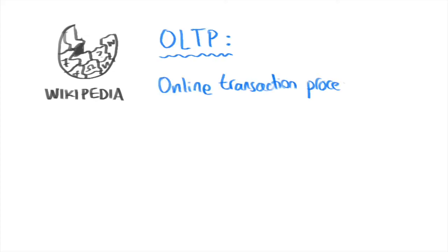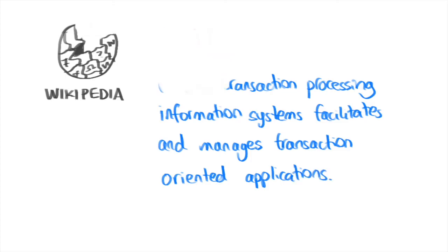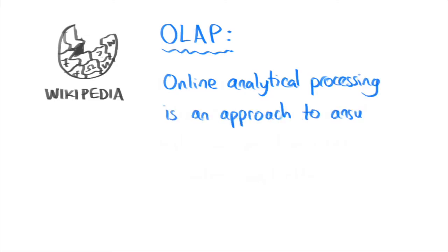So far you probably have a better understanding of what OLTP versus OLAP means than the definitions provided by Wikipedia, which states OLTP is online transaction processing, information systems that facilitate and manage transaction-oriented applications, or OLAP, which is online analytical processing, is an approach to answer multi-dimensional analytical queries swiftly. Basically, OLTP are the type of queries or operations executed on a database, and OLAP are the type of queries executed in a data warehouse.